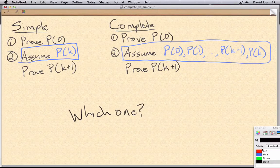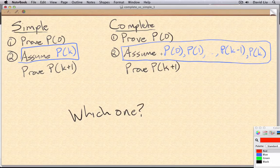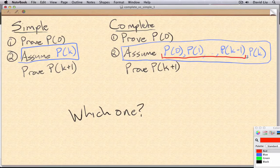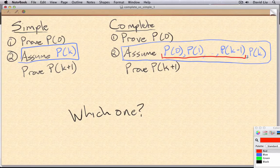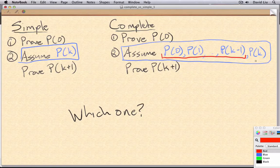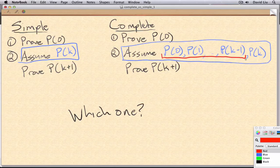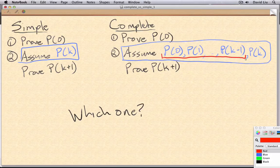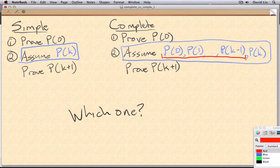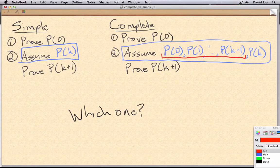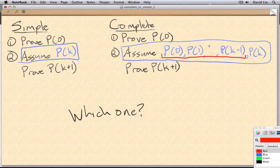Now deciding which one to use really depends on whether or not we need to use these extra assumptions, because note that P(k) is assumed in both proofs. In the next few minutes, I'm going to talk about two characteristics that problems might have that are hints that you'll need to use these assumptions, and therefore complete induction.